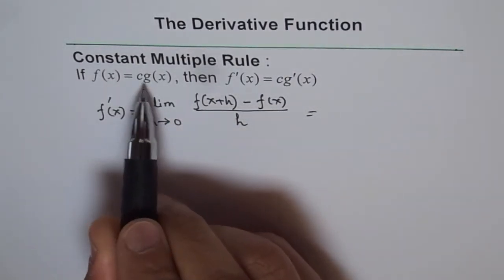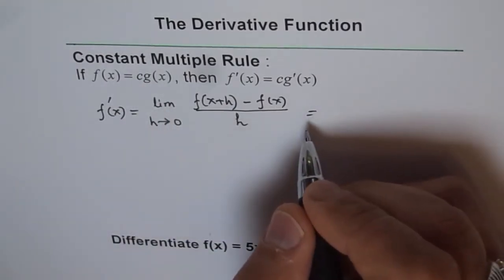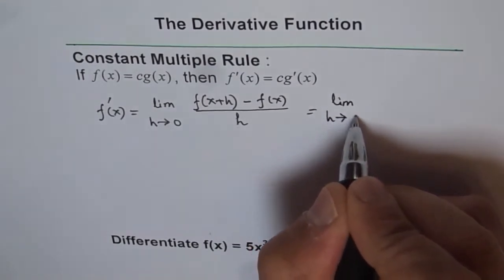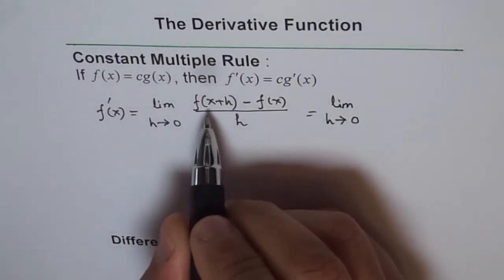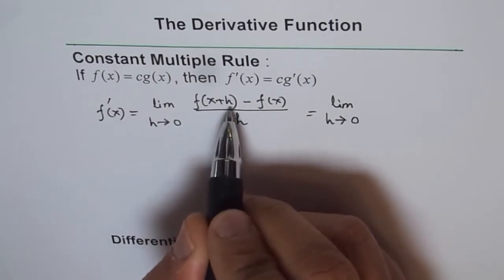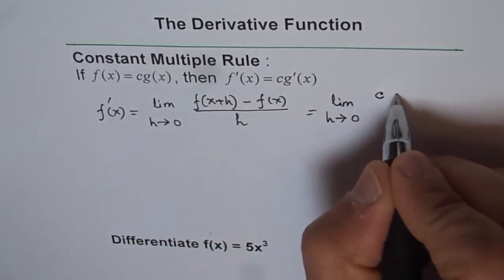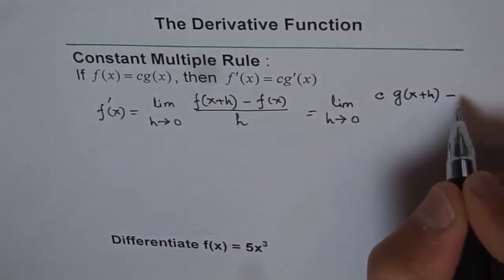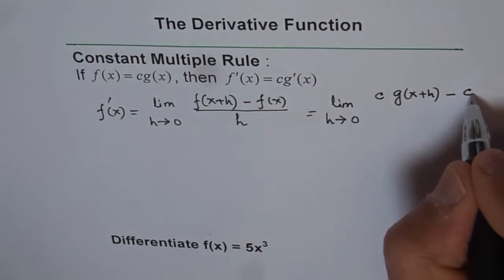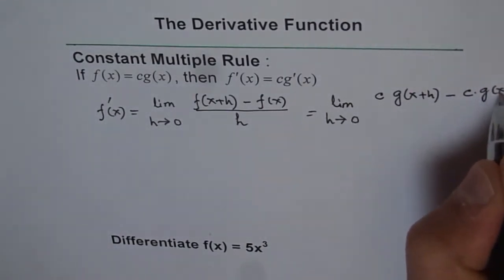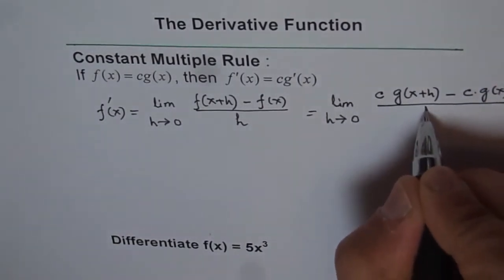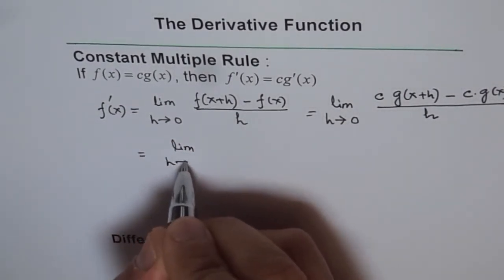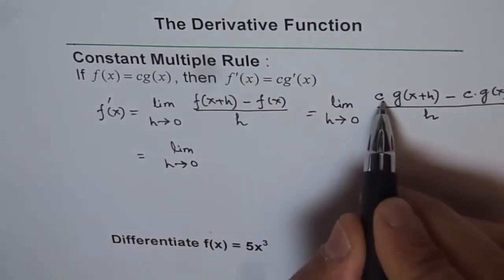Now here, the function given to us is c times g of x. So we can write this as limit h approaches 0, and we have to replace x with x plus h. So we get c times g of x plus h, minus c times g of x, over h.